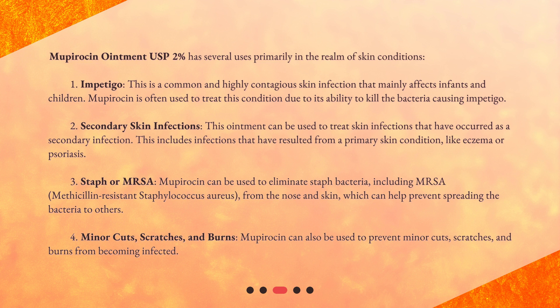Second, Secondary Skin Infections. This ointment can be used to treat skin infections that have occurred as a secondary infection. This includes infections that have resulted from a primary skin condition, like eczema or psoriasis. Third, Staph or MRSA — Mupirocin can be used to eliminate staph bacteria, including MRSA (methicillin-resistant Staphylococcus aureus), from the nose and skin, which can help prevent spreading the bacteria to others.